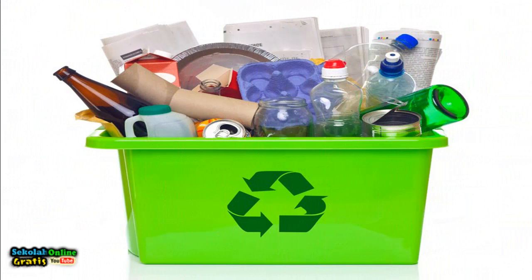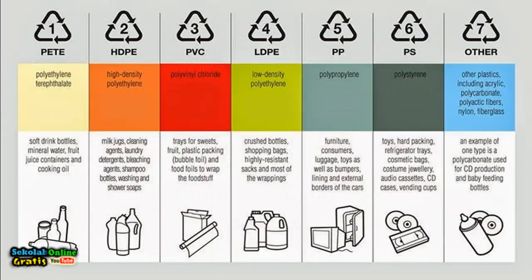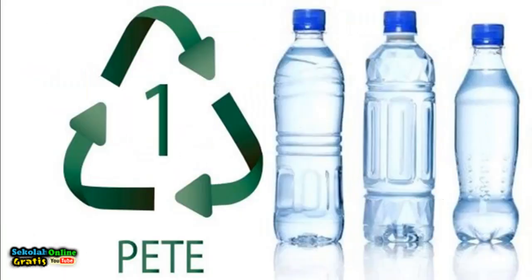Code 1 or PETE or polyethylene terephthalate, this plastic is designed for one-time use. If used repeatedly can increase the risk of consumption of plastic materials and bacteria in the plastic. Because the type of PETE is difficult to clean and can be toxic. The type of PETE should be recycled not reuse. PETE is usually used in bottles of mineral water or other beverages and some food containers.